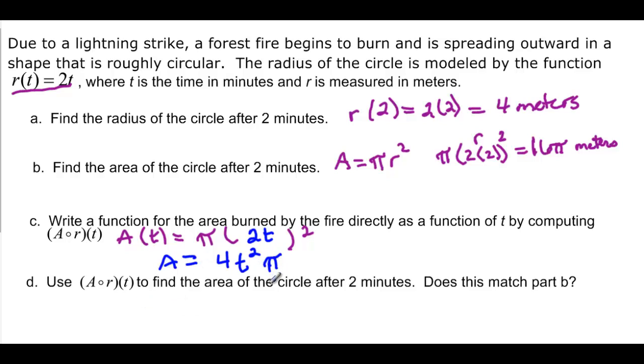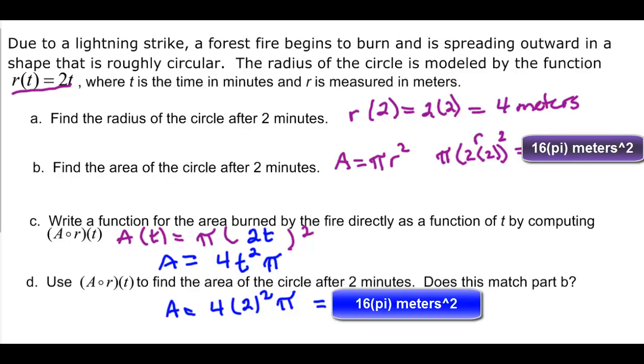So now I want to use this function to find the area of the circle in 2 minutes. A is equal to 4 times 2 squared times pi. Well, that's 4 times 4, which is 16 pi meters squared. Notice that's really what we did above. First we figured out the radius, and then we figured out the area using that same value. We can do it separately, or we can make it one function with compositions, which is a little bit easier to use.